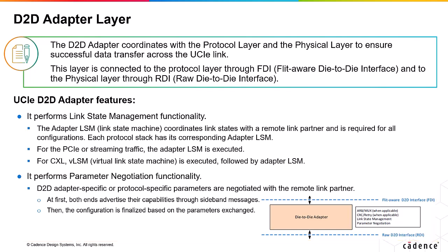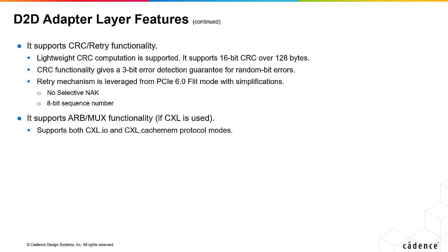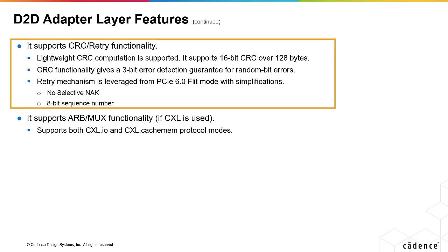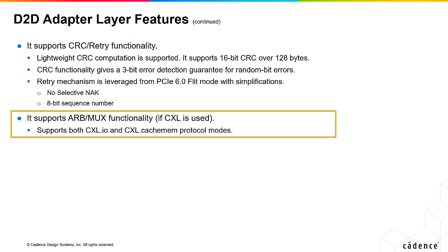Some more features of the D2D adapter layer are explained here. It supports CRC and retry functionalities. Lightweight CRC computation is supported where 16-bit CRC is used over 128 bytes, giving a 3-bit error detection guarantee for random bit errors. The retry mechanism is leveraged from PCIe 6.0 FLIT mode with some simplifications, like no selective NAC and an 8-bit sequence number. It also supports arbitration and MUX functionality if CXL protocol traffic is passed through UCIE, supporting both CXL.IO and CXL.Cache MEM protocol modes.